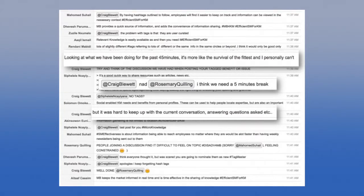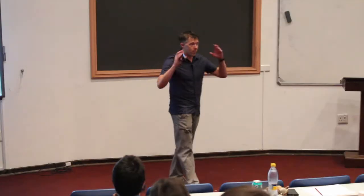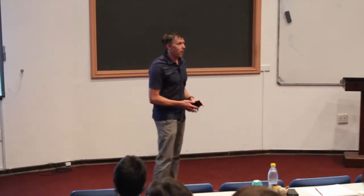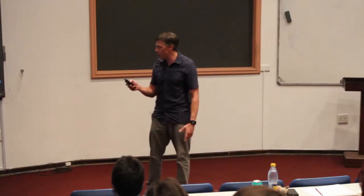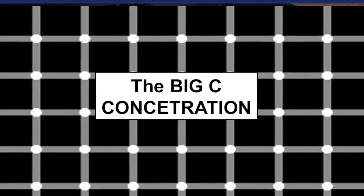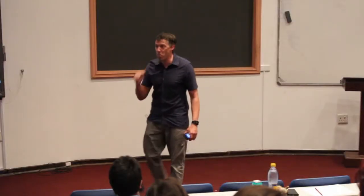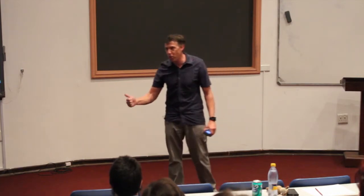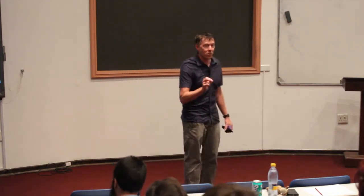One student said 'I think we need a five-minute break.' My reply: 'You can have a break, but we're carrying on.' Another said it was hard to keep up with the current conversation and answering questions. They just couldn't keep up. Was that bad? Confusion? Chaos? Well, the big C is concentration — there was not a student in that class who was not concentrating. 100%. If you want one thing out of your pupils, if they can give you concentration, you have won. If that requires confusion and chaos, you get concentration — you've won.